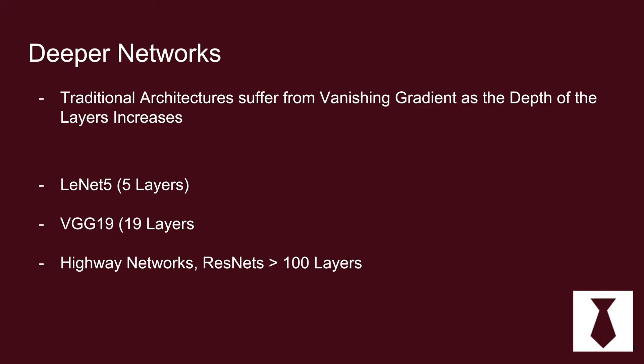Some of the traditional CNN architectures like LeNet-5 and VGG-19 don't have that many layers, which is in contrast to these newer models such as highway networks, ResNets, and DenseNets, which all have many layers.